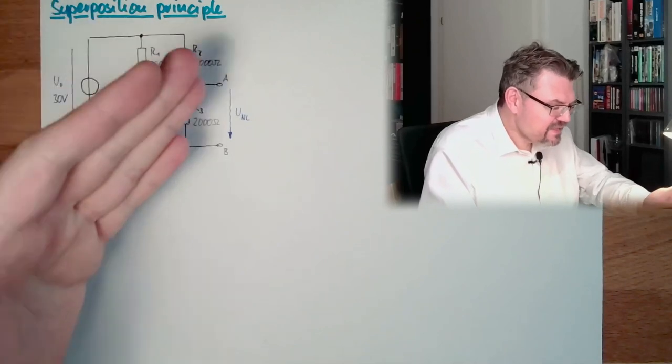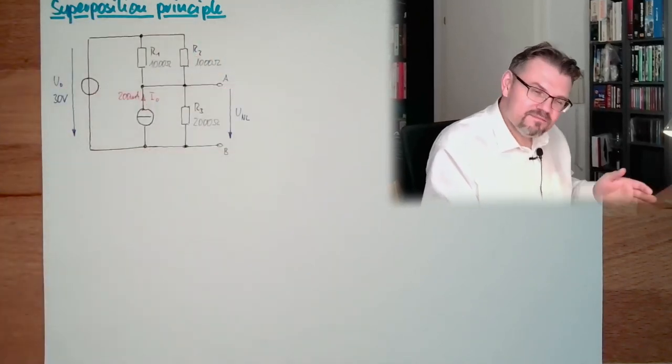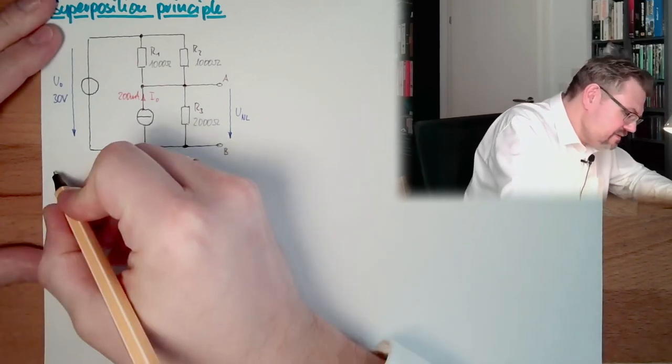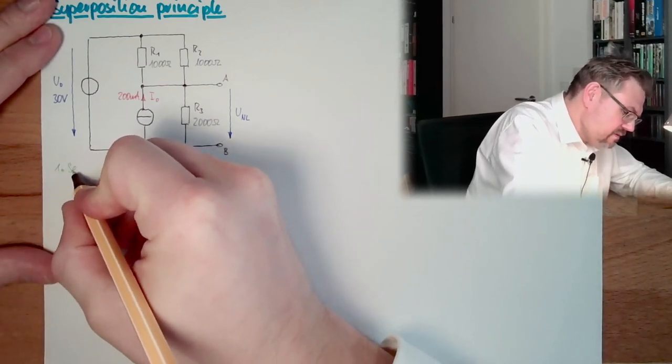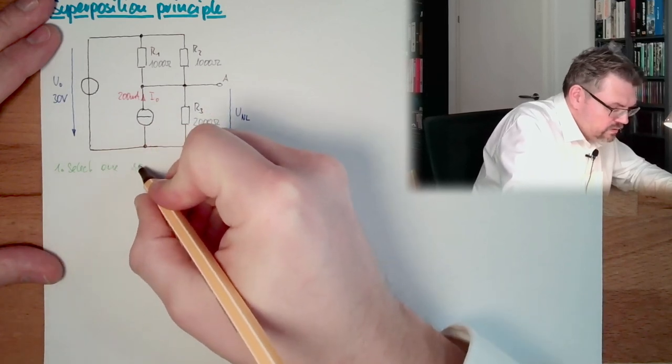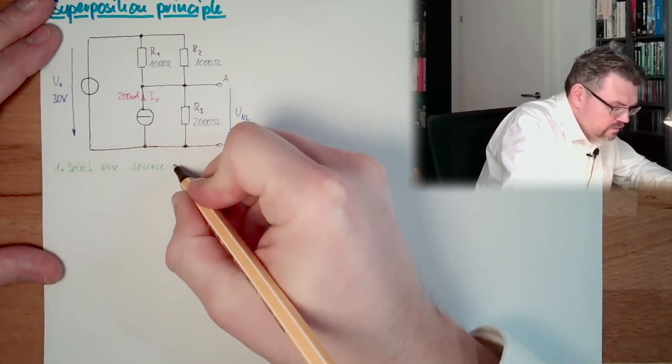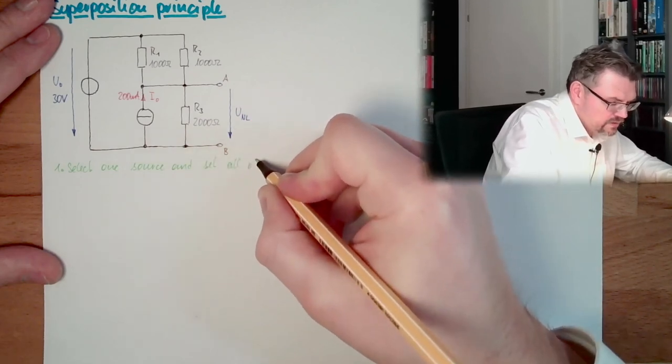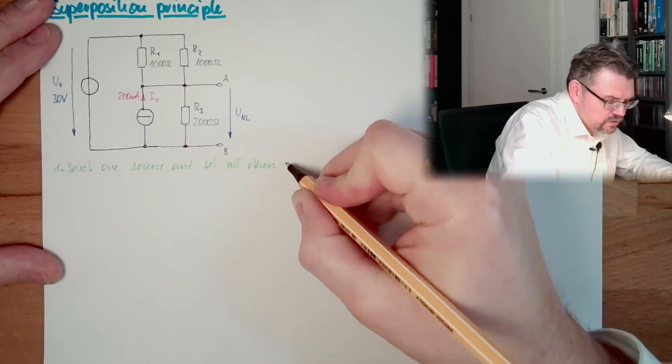So we simply select, that's the first step. First step, select one source and set all others zero.